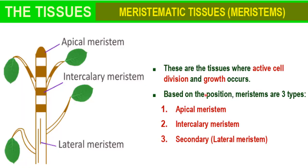What is meristematic tissue? Meristematic tissues are the tissues where active cell division and growth occurs. Active cell division means cells present in this tissue are actively and rapidly dividing. Based on their position, meristems are of three types: apical meristematic tissue, intercalary meristem, and lateral meristem.